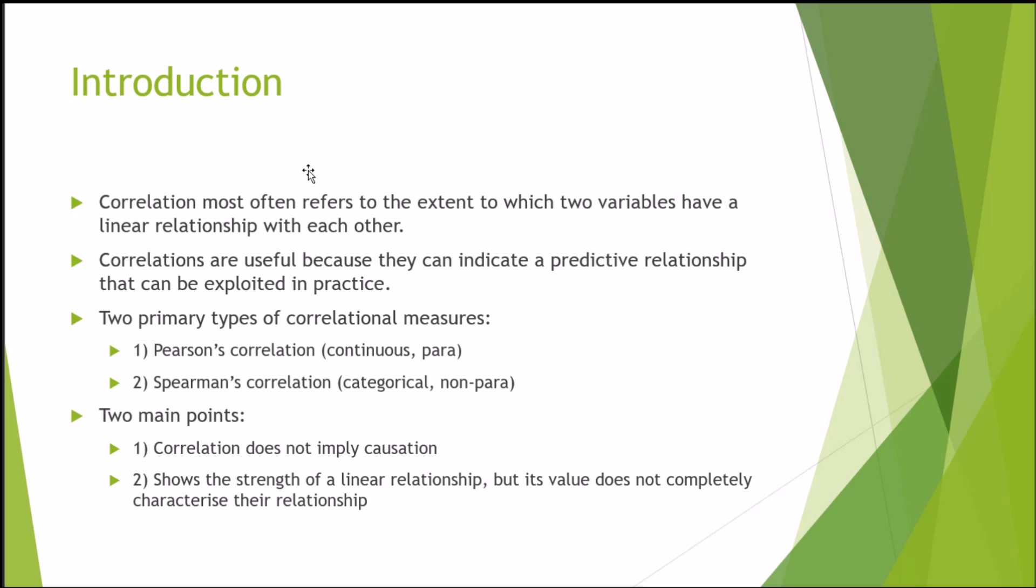There are two primary types of correlational measures. First, there is Pearson's correlation, which is a parametric statistic using continuous data. And Spearman's correlation, which is a nonparametric statistic which can use categorical data as well as continuous data.